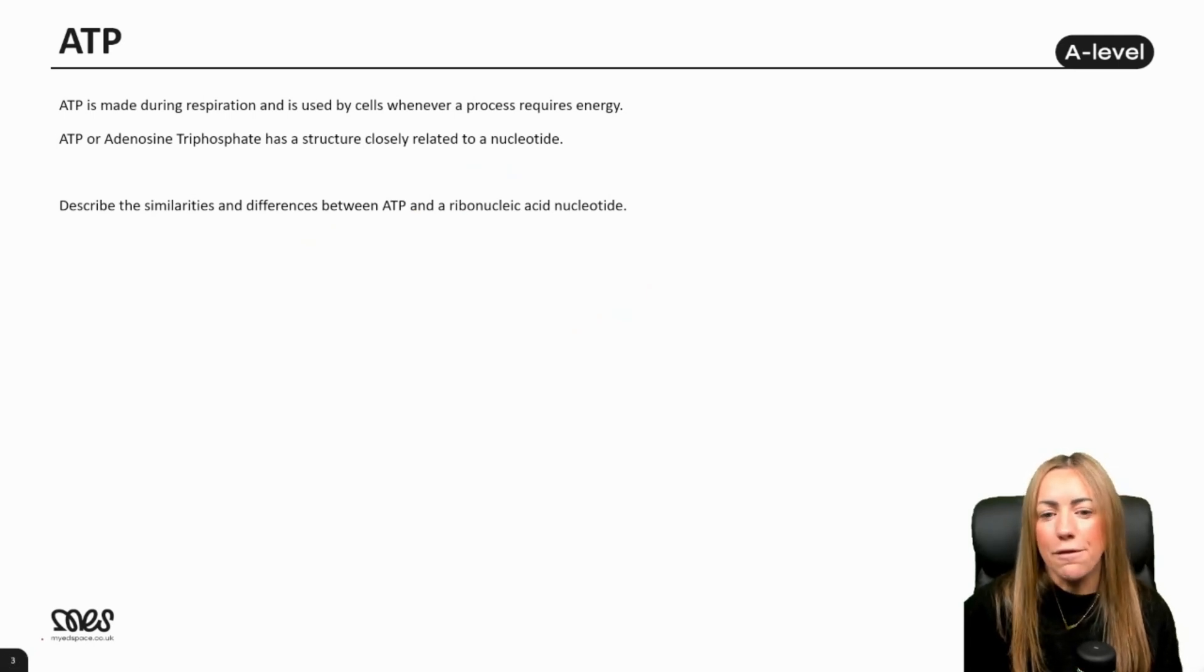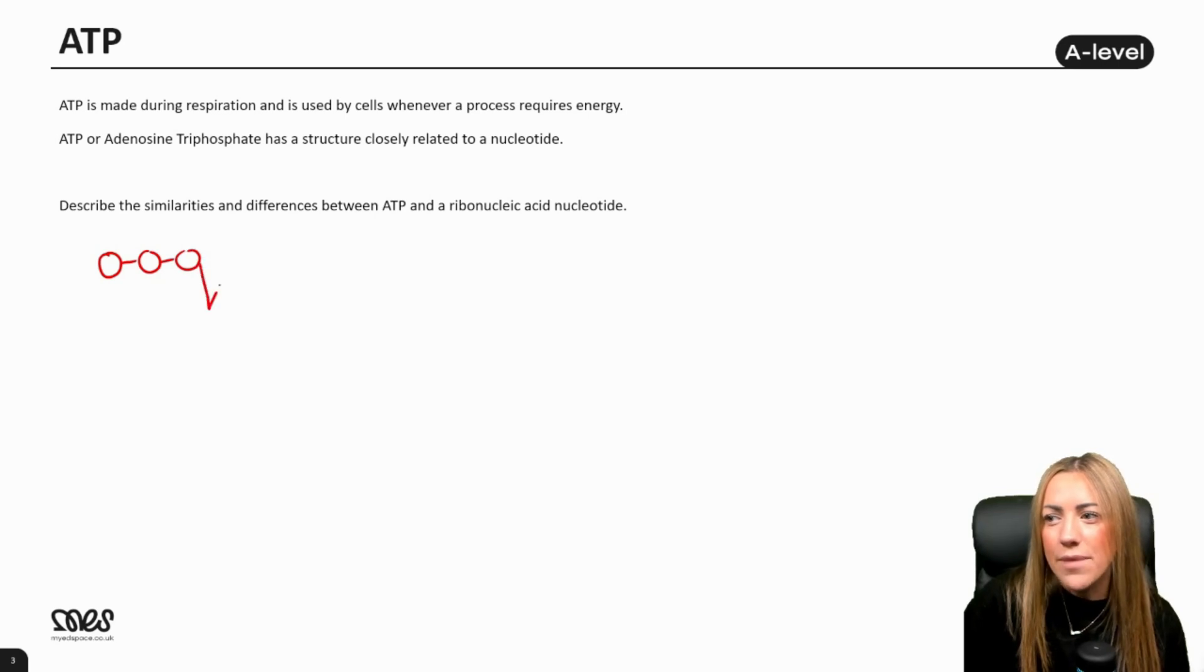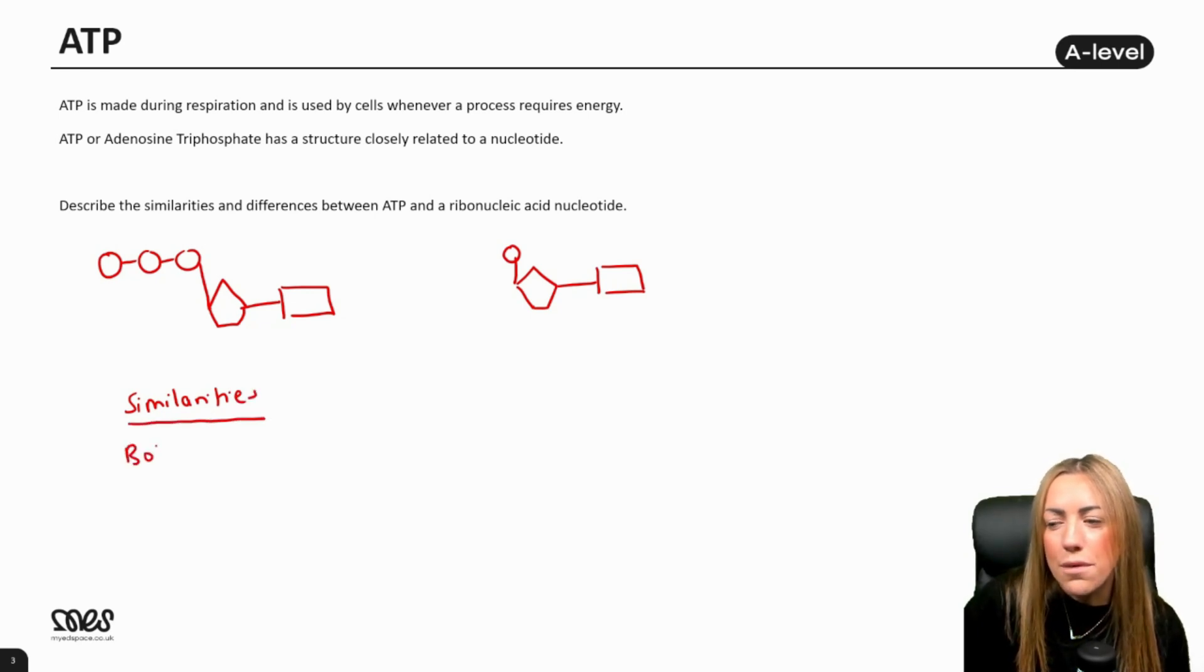If we think about the differences between an ATP molecule and an RNA nucleotide, that can come up quite a lot because there are similarities and differences. In terms of similarities, they both contain ribose sugar, the same pentose sugar. They both contain phosphate or phosphate groups, and they both contain a nitrogenous base.